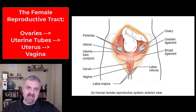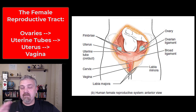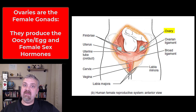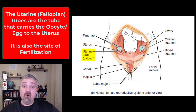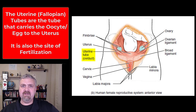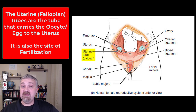Getting sperm from the seminiferous tubules in the testes out of the body involves more steps in the male system. With the female system, you've got the ovaries, which produce the gamete — the oocyte — as well as the female reproductive hormones. Then you have the uterine or fallopian tubes. Uterine tube is the primary term now, but they were always called fallopian tubes — named after Italian anatomist Gabriello Fallopio in the 1500s. The uterine tubes are actually where the oocyte or egg is fertilized.